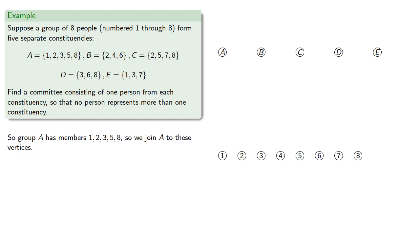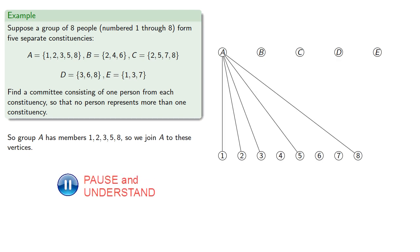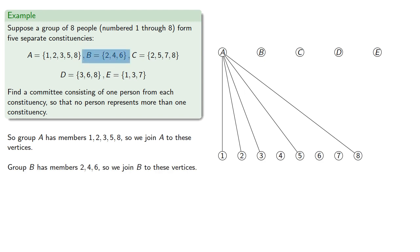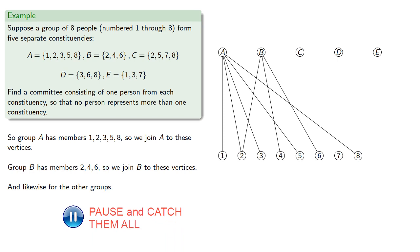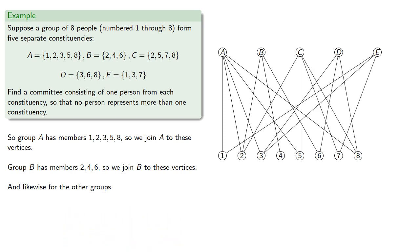And then we'll draw an edge between a person and a constituency if the person is in the constituency. So, group A has members 1, 2, 3, 5, and 8, so we join A to these vertices. Group B has members 2, 4, and 6, so we join B to those vertices. And likewise for the other groups, which produces our graph.